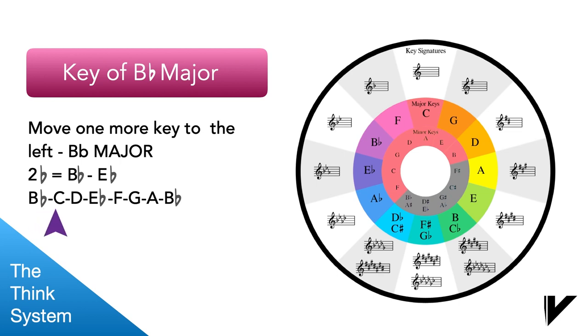So let's say the B flat major scale together: B flat, C, D, E flat, F, G, A, B flat, and let's do it backwards: B flat, A, G, F, E flat, D, C, B flat.